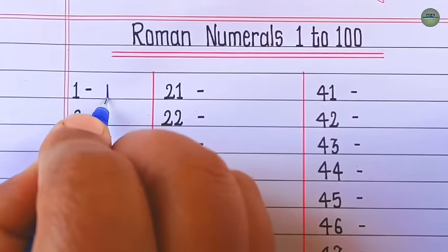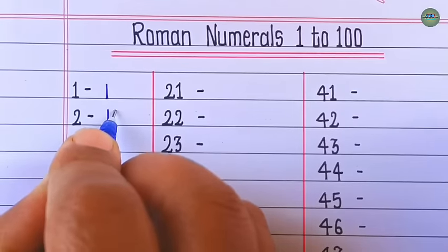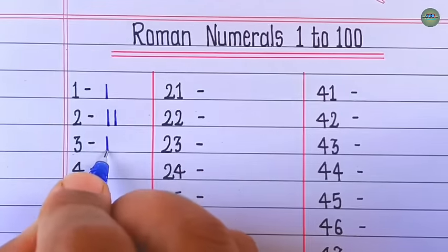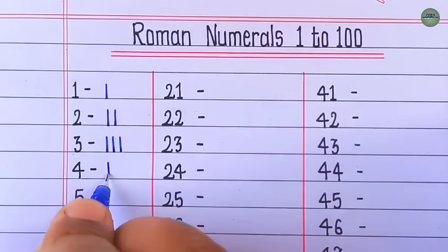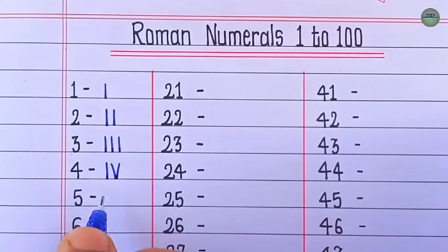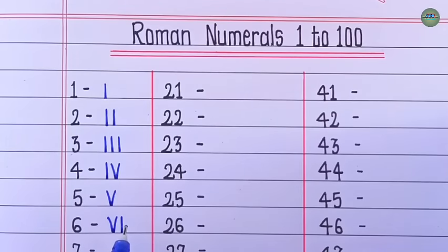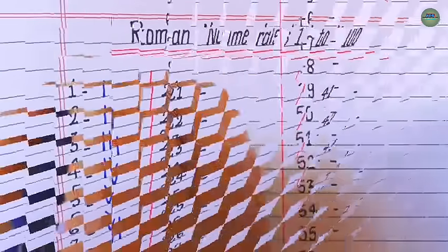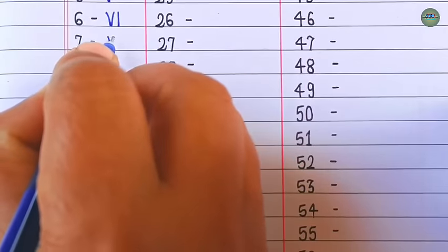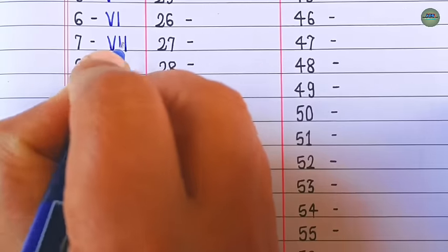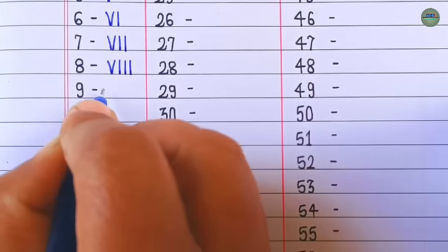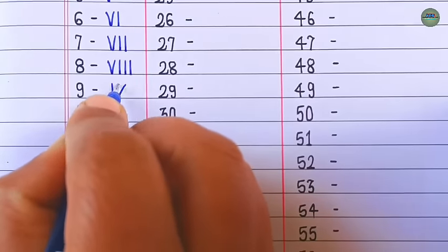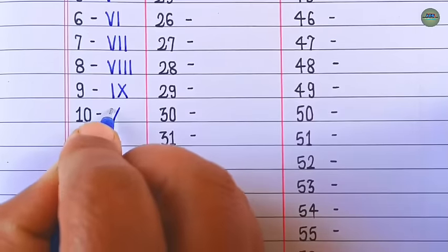1 is I, 2 is II, 3 is III, 4 is IV, 5 is V, 6 is VI, 7 is VII, 8 is VIII, 9 is IX, 10 is X.